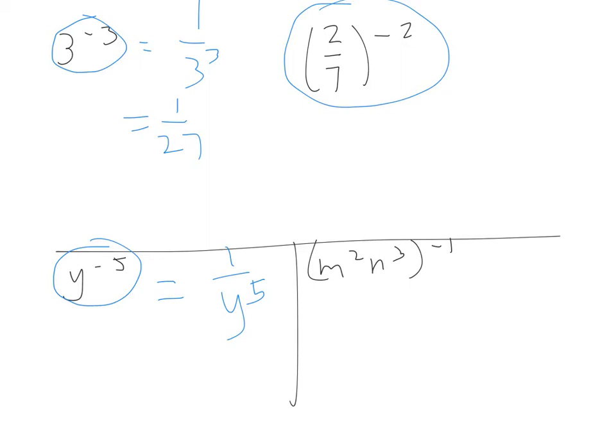So this one here. Now remember, if we don't have any powers, what should we write our powers to be? 1. And what happens between these two powers and these two? They multiply. So we end up with 2 to the power of negative 2 over 7 to the power of negative 2. Because negative 2 times 1 is negative 2.